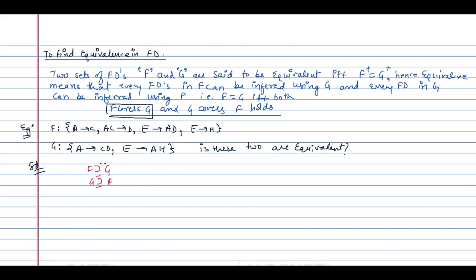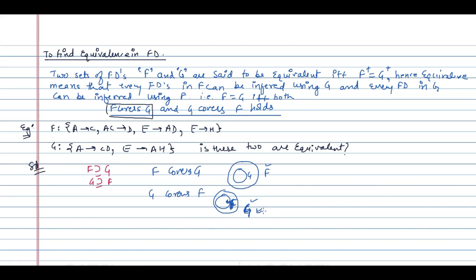When I say F covers G, G is a subset covered by F. When I say G covers F, every functional dependency in F can also be denoted in G, and every functional dependency in G can also be denoted in F. If both hold, then we can say F equals G.